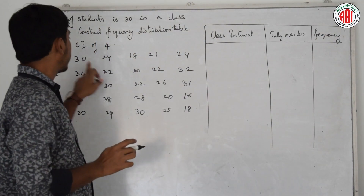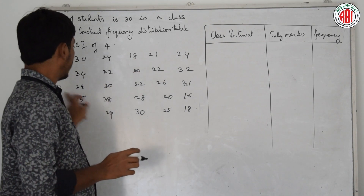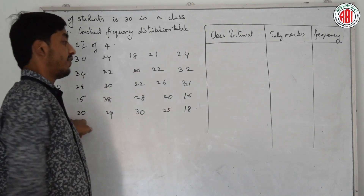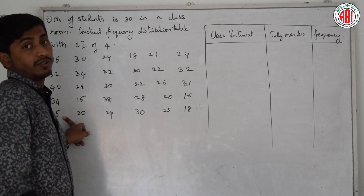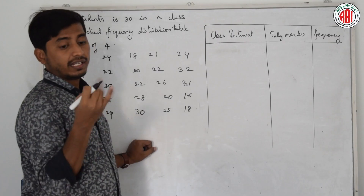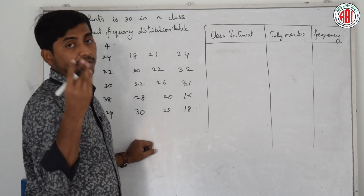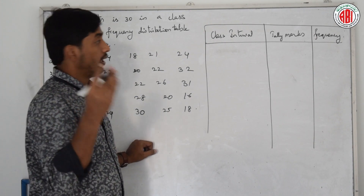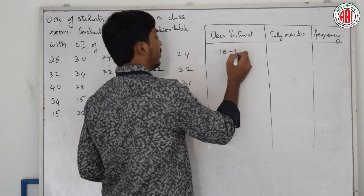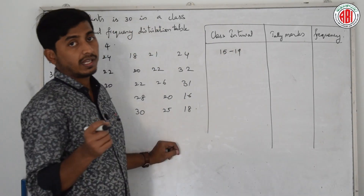Now check which is the least number in the data. We find 18, then 16, then 15 — so 15 is the least number. Take 4 numbers after 15: 15, 16, 17, 18, 19, because 19 minus 15 equals 4. That means we write the first class interval as 15 to 19.